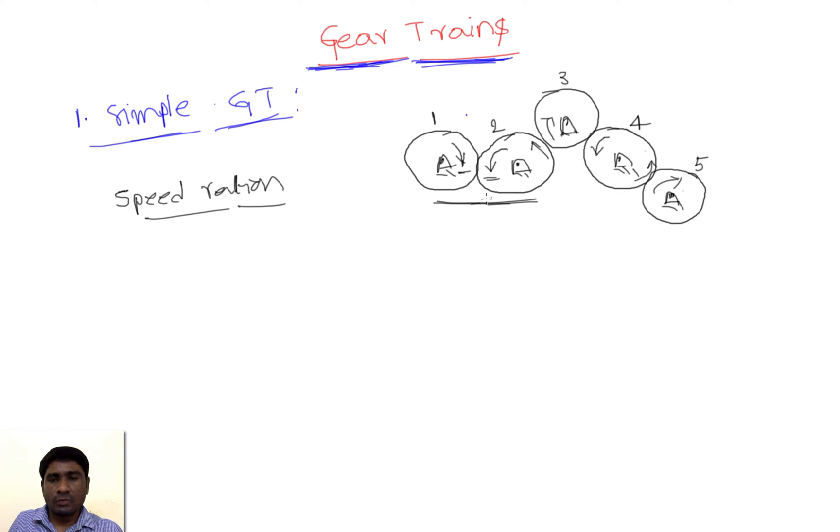So if I take gears one and two, n2 by n1 equals—I need to write in terms of the number of teeth on this gear. Generally, either the number of teeth on the gear or the diameters of the gears would be given so that we can find out the velocity ratio. In most cases, it's easier to find out the number of teeth on the gear.